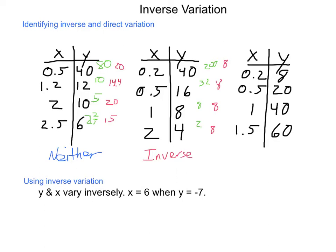Next, let's look at the quotients of our last table. 8 divided by 2 tenths is 40. 20 divided by 1 half is 40. 40 divided by 1 is 40. And 60 divided by 1 and a half is also 40. So, we have the same quotients all the time. This shows direct variation. So, looking for quotients and looking for products will help us to identify these.